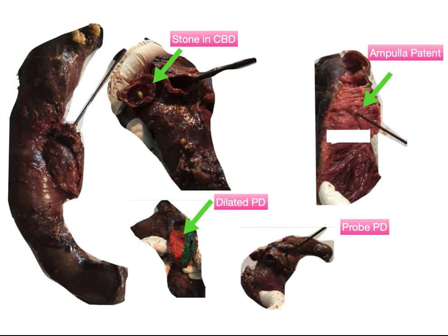When we pass the probe through the CBD, we can determine if the probe is coming out from the ampullary opening. If the probe does not exit from the ampullary opening, that indicates a blockage at the level of the ampulla, suggesting a periampullary tumor. In cases of pancreatic head tumors, the ampullary opening would generally remain patent, though this is not an absolute rule — ampullary obliteration can occur with tumors from any of these locations.